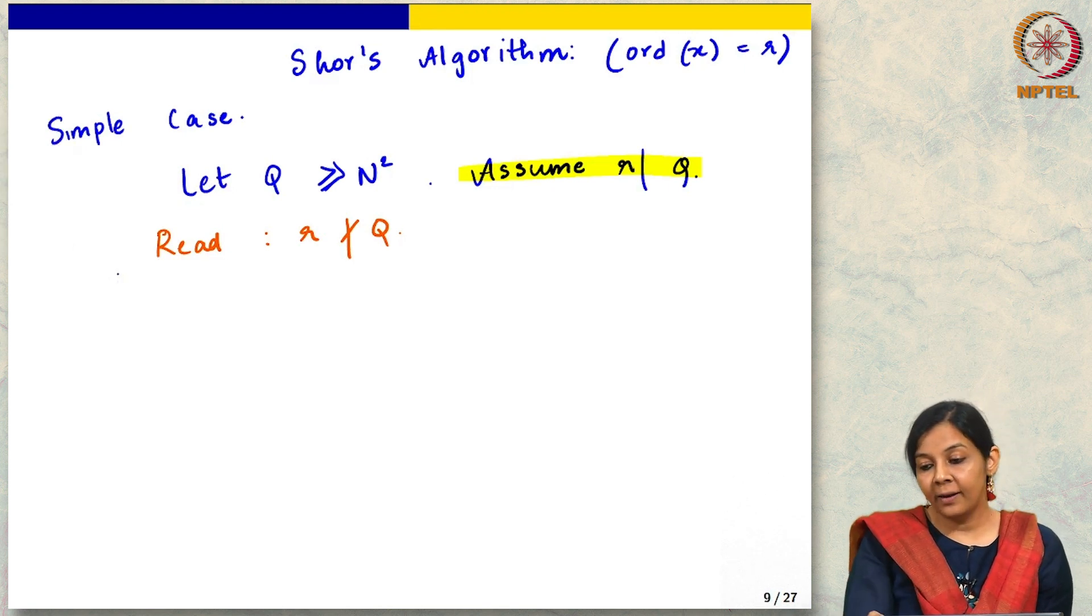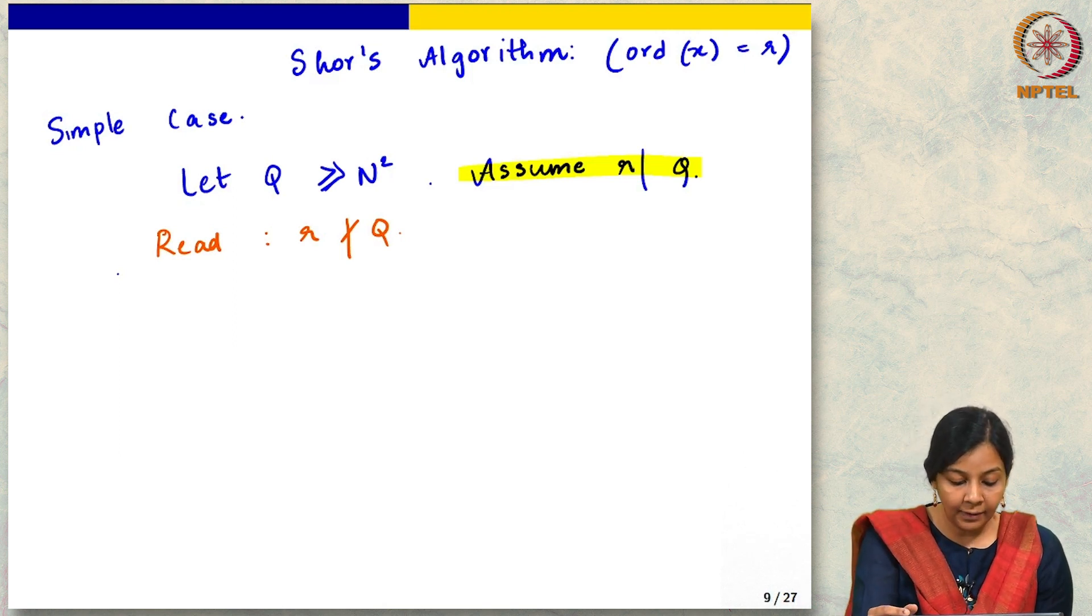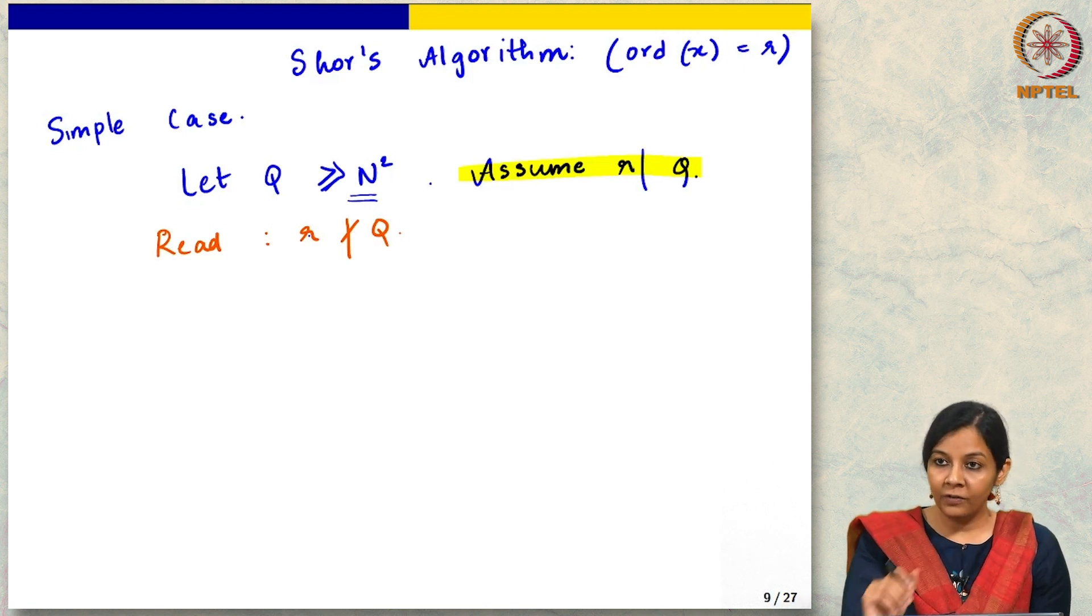For the case where we assume that r divides q, by the way, here note just think about what we are doing. We have this n that we want to factor, and what we are doing is trying to find the order of an element x, which we were denoting by r, and we saw that finding the order of this element is sufficient for us.